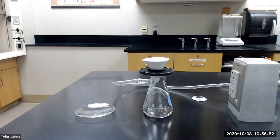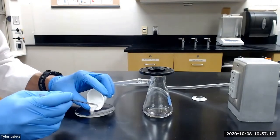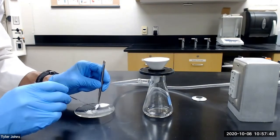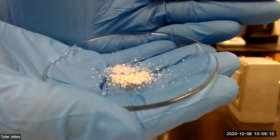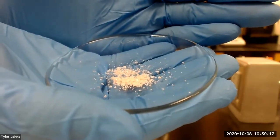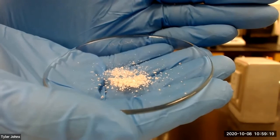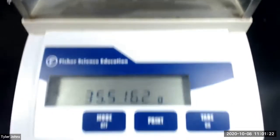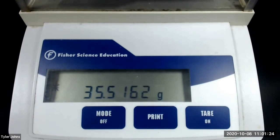We now need to collect our crude acetaminophen crystals on our pre-weighed watch glass. This is what our crude acetaminophen crystals look like. We next need to determine the mass of our crude product. The mass of our pre-weighed watch glass and our crude acetaminophen product is 35.5162 grams.